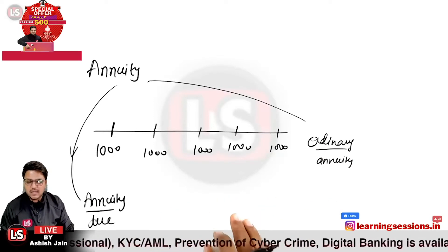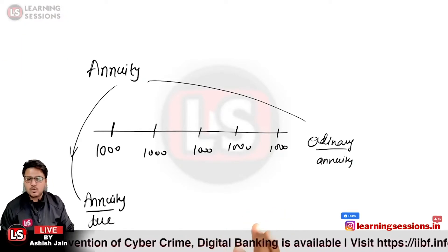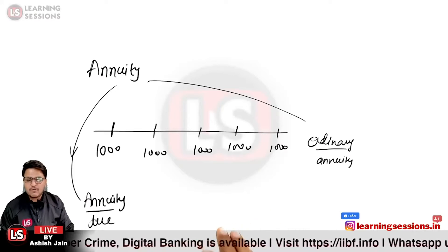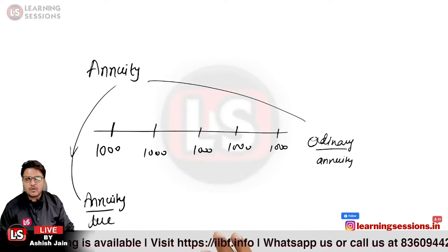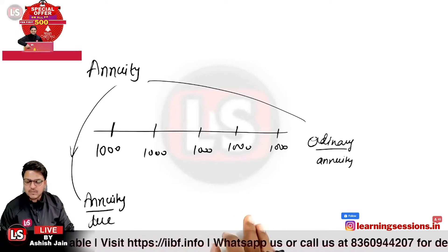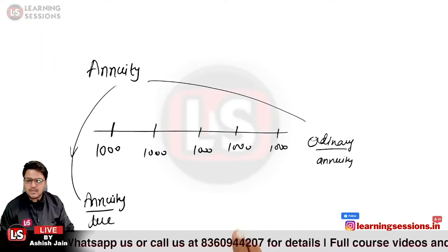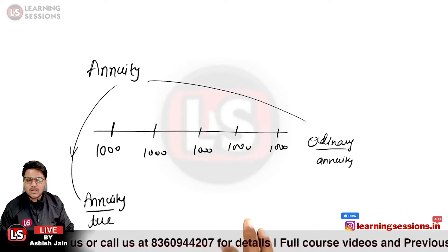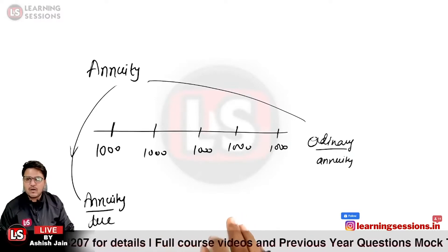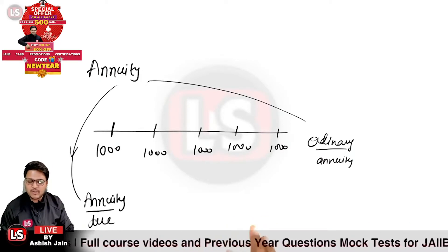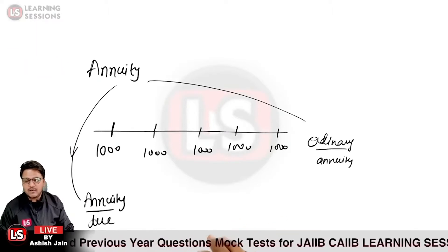If you are paying EMI, what type of annuity would that be — annuity due or ordinary annuity? In the case of EMIs, that is equated monthly installments, it is an example of ordinary annuity, because you are paying the amount to the bank at the end of the interval itself.